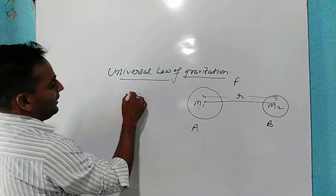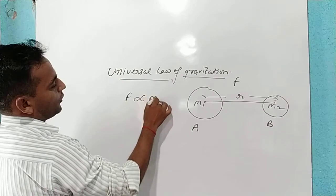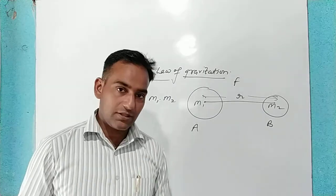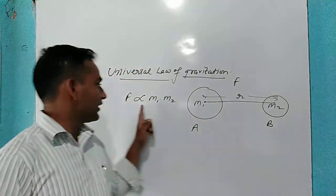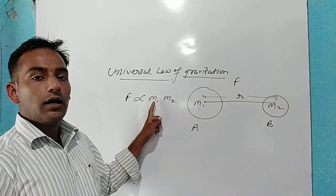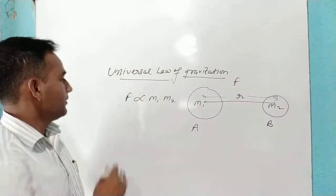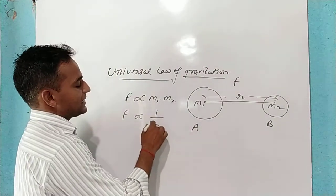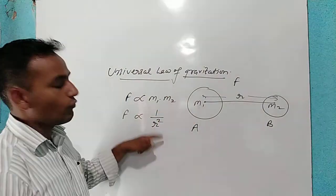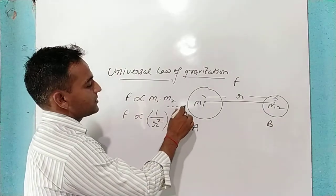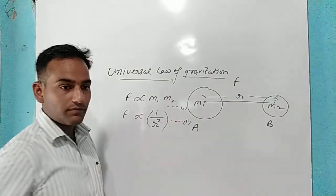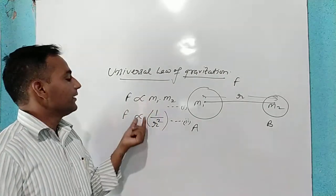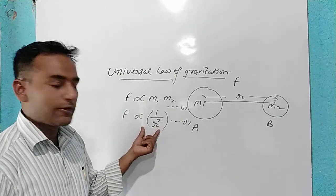The force of attraction F is directly proportional to the product of the masses of these two objects. The force of attraction between two bodies is directly proportional to the product of their masses, and the same force of attraction is inversely proportional to the square of the distance between them — inversely proportional means one upon R square. So the force of attraction between two bodies is directly proportional to the product of their masses and inversely proportional to the square of the distance between them.